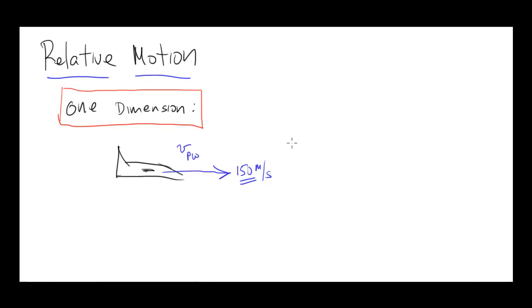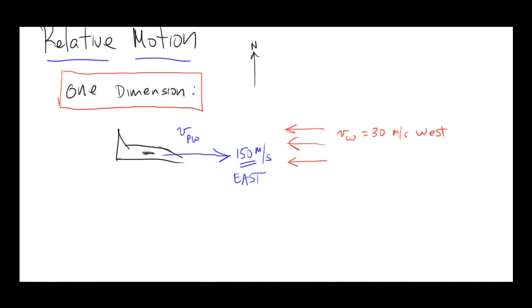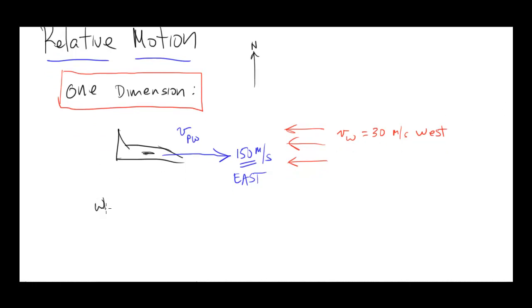So maybe the wind is blowing this way — at what we call a headwind. The velocity of the wind is in this direction. I should give this a direction: let's say this is east, so 150 meters per second east. I'm thinking of north as being up, so east is to the right. Let's say the wind has a velocity that's obviously opposite east, which is west, at 30 meters per second west. And we could ask a very simple question: what would be the speed of the plane relative to the ground — in other words, what's the plane's ground speed?